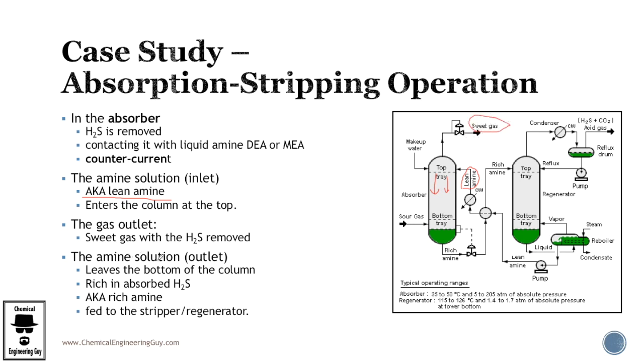Now the amine solution in the inlet is called lean amine and should enter on the top because we need counter operation. The gas outlet, as stated before, will be the sweet gas. And the amine solution in the outlet, which is the rich amine, is here. Why do we call this rich? Because it has high hydrogen sulfide content, or the high acid content. We call this rich, just to ensure that this is the amine mixture with rich acids. This could be our end of the product. We can have a problem on absorption. But the overall idea is to recover this rich amine.